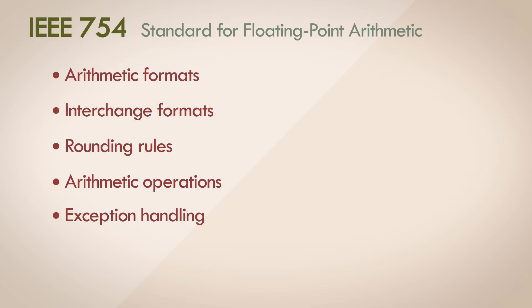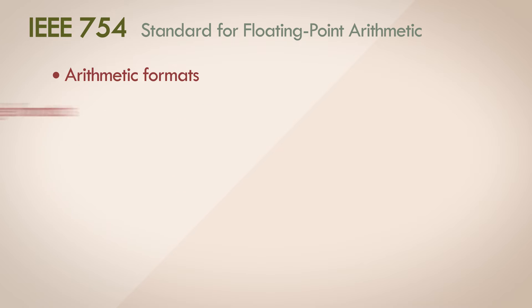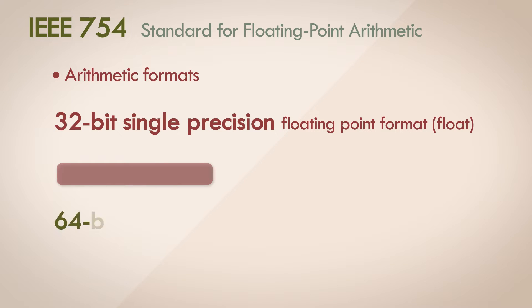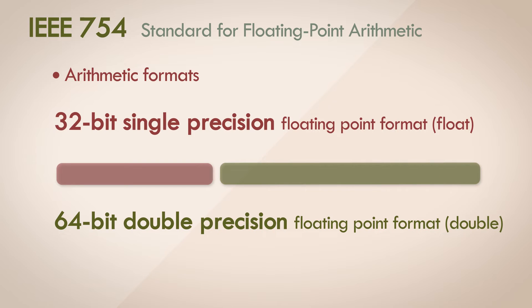Today we're just going to discuss the arithmetic formats and representation of floating point numbers, and more specifically two variants: a 32-bit variant called the single precision floating point format, and its bigger brother, the 64-bit variant, commonly called the double precision floating point format. These are typically supported in most hardware and hence supported in most high-level programming languages as well.